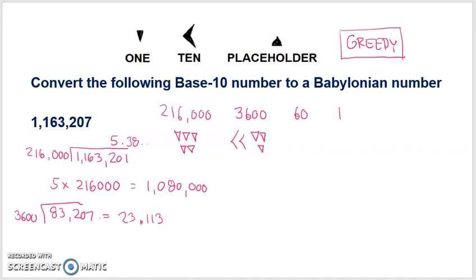Now, what do we have? Well, first of all, we've got to figure out 23, 3600s. That's 23 times 3,600, which is 82,800. So, what we did is we subtracted 82,800 from the remainder. Remember, when we take out the 5, 216,000s, we have a remainder of 83,207. When we subtract 82,800 from that, so you take 83,207, subtract 82,800, and that leaves you with 407.